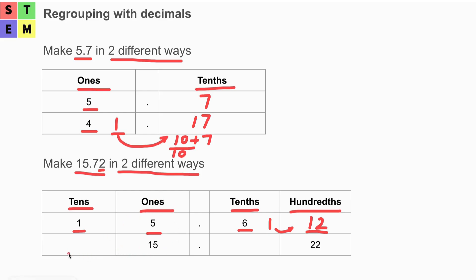Let's look at the second row. The tenths place is empty here. Because at the ones place we have 15 ones — and 15 ones is actually one ten with five ones. So we won't have anything at the tens place; that will be zero because we already have 15. Now at the hundredths place we have 22, but we should only have two there, so we have an extra 20. That extra 20 must come from the tenths place.